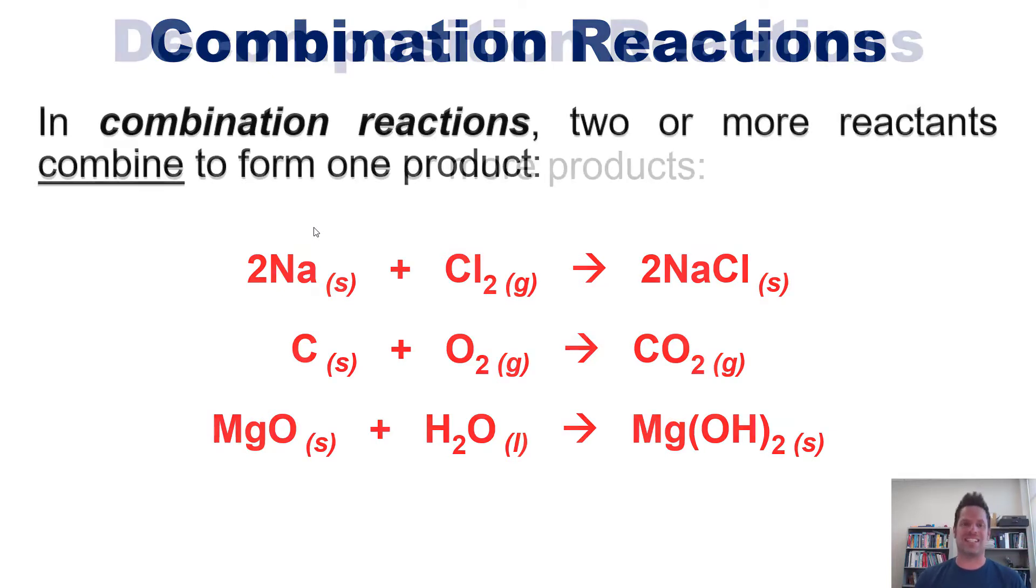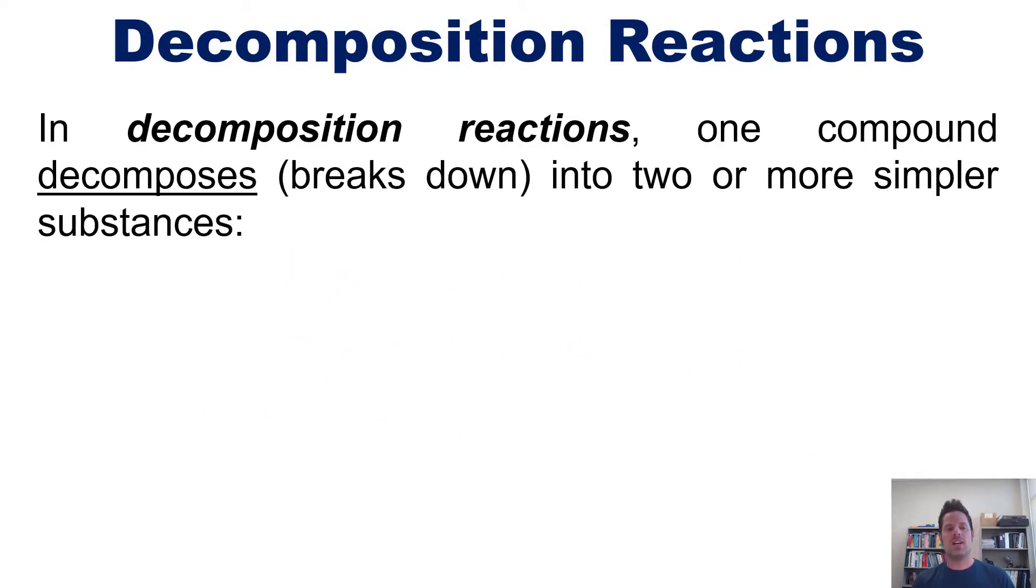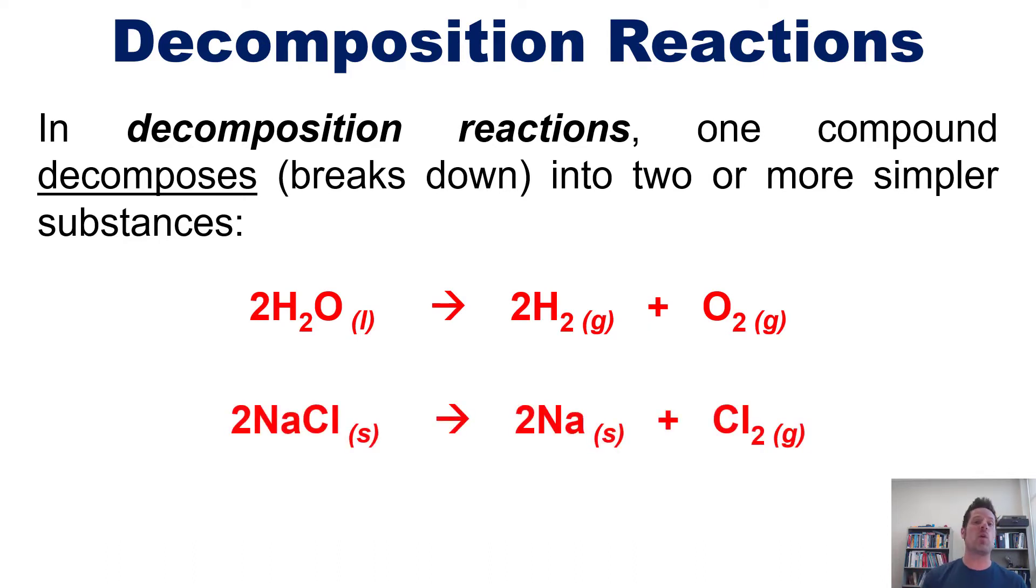The next type is the opposite: decomposition reactions. In these reactions, one compound decomposes or breaks down into two or more simpler substances. For instance, water can break down into hydrogen and oxygen gases, or sodium chloride could go in reverse to yield sodium metal and chlorine gas.